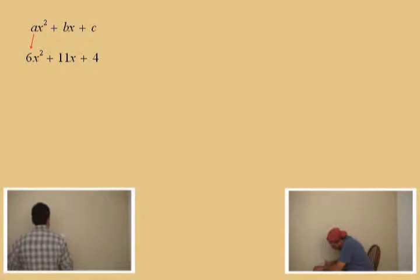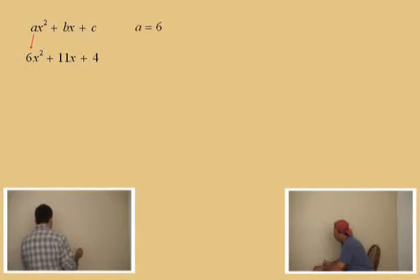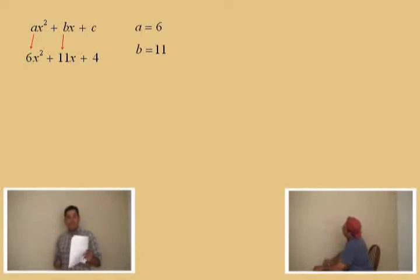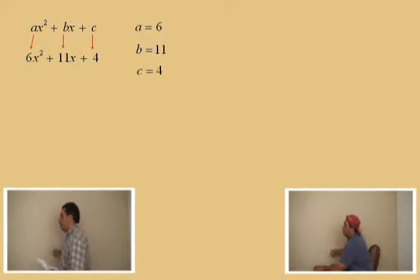Well, what is our a term, Charlie? Look up there. The a is the what? 6. Is the 6. Now, how about the b? 11. That is the 11. And the c is the what? 4. It's a plus 4.